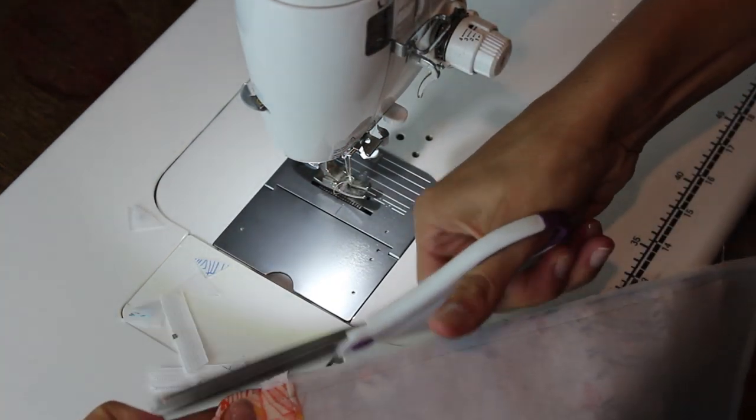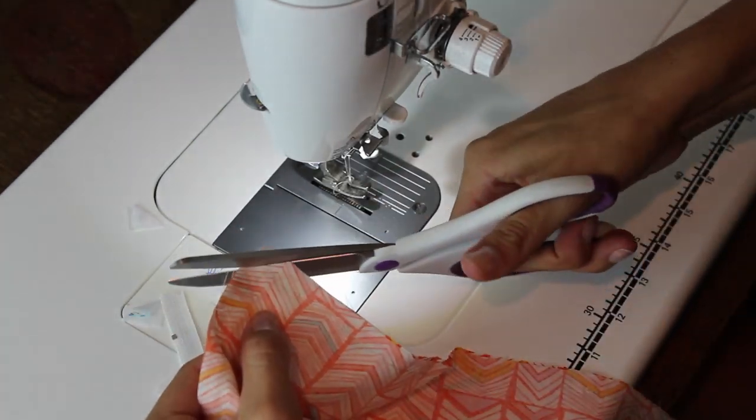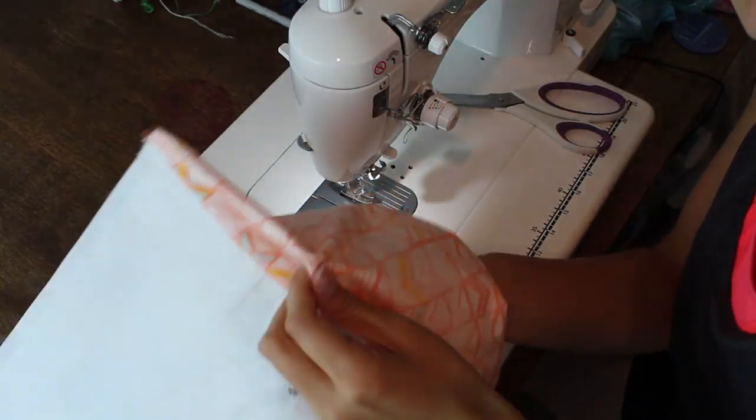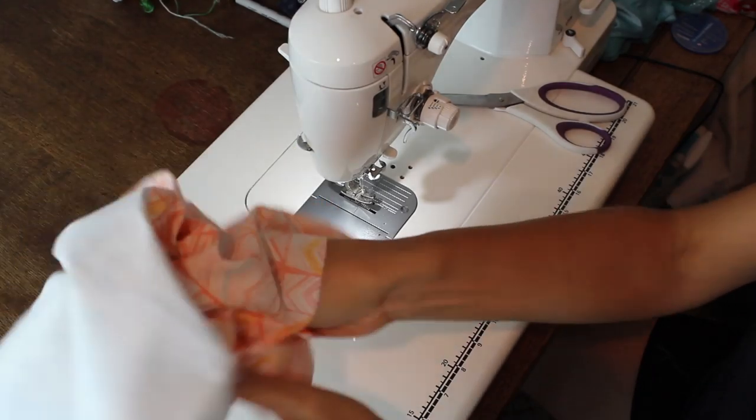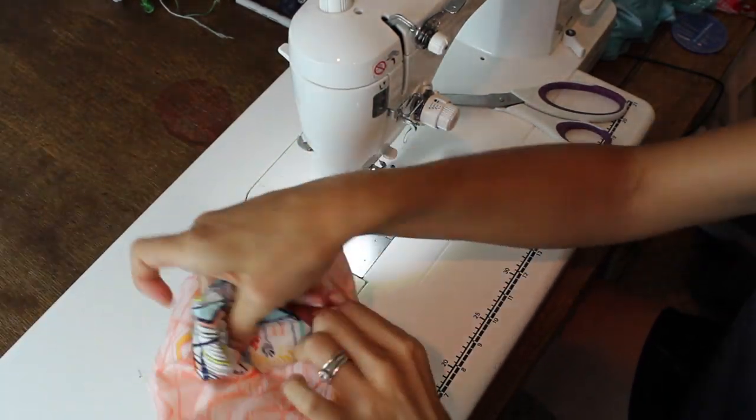Then you want to trim your corners just like we did on the handle. Also trim off those edges on the zipper, the leftover little pieces in there. And then you want to start flipping your bag the right side out.